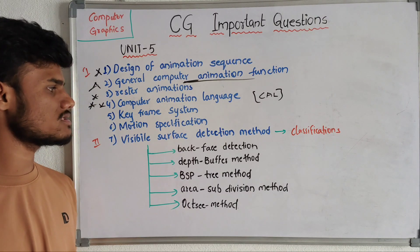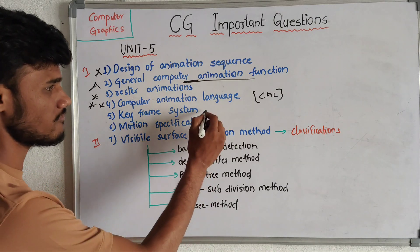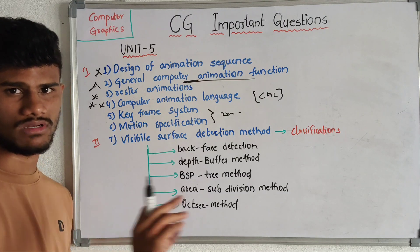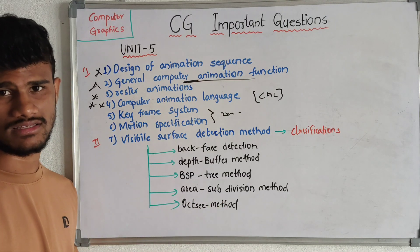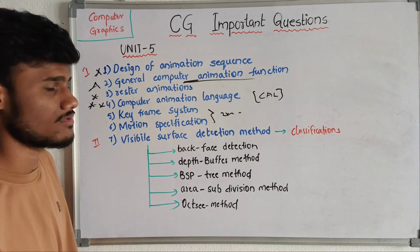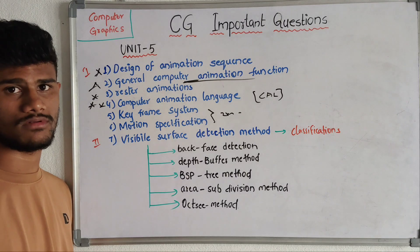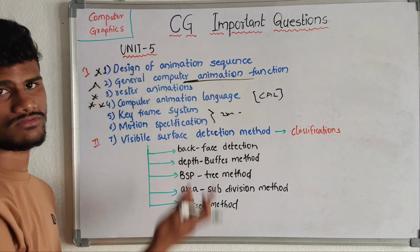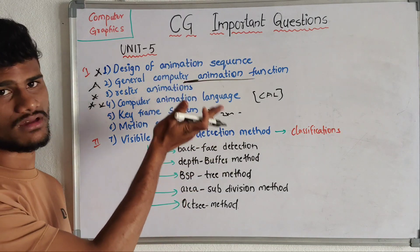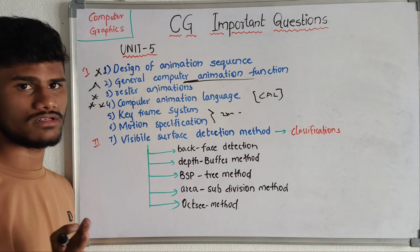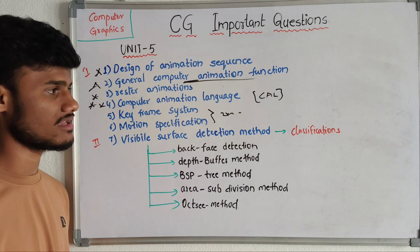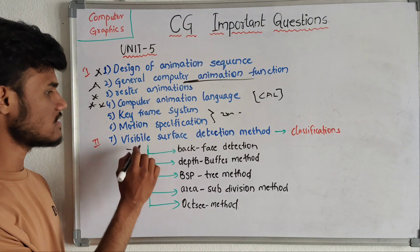Computer animation language is also an important question — it explains the types of language used in animation. Next we have keyframe system — what is meant by a keyframe system — and motion specification. These are the limited topics in the first part of this unit.